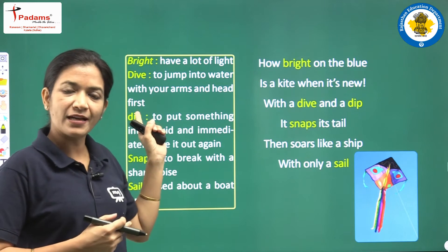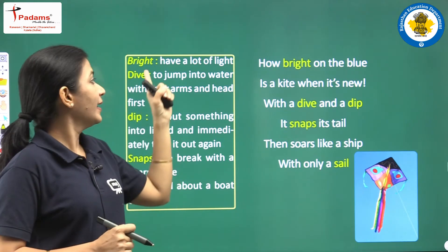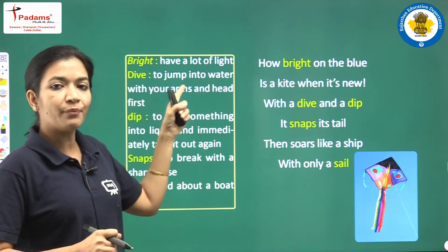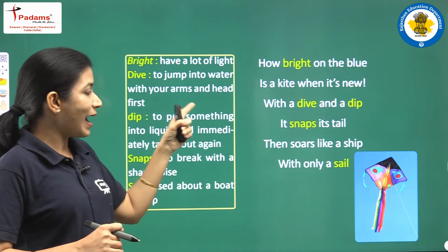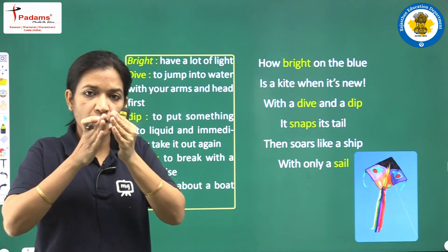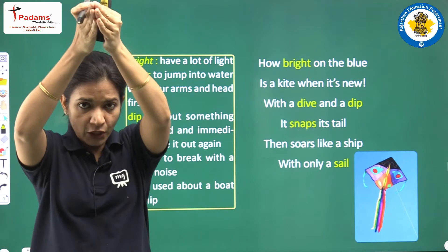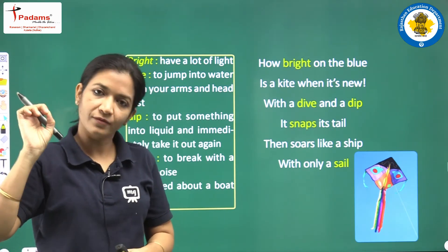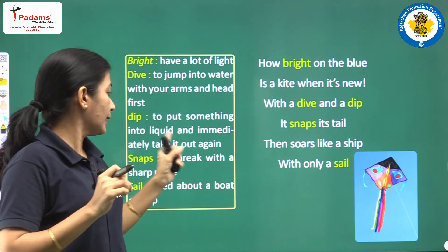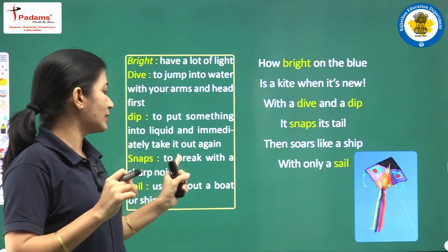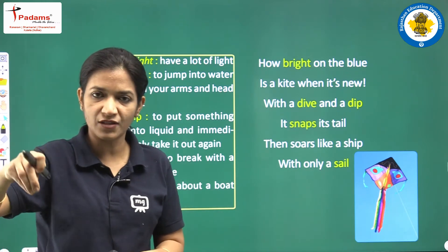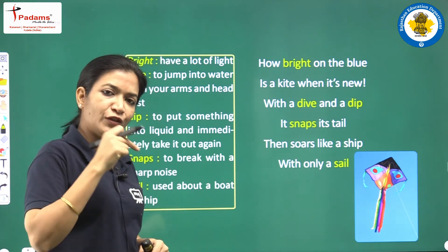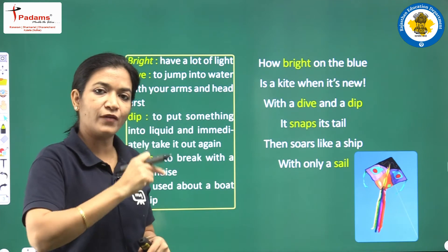First we will start with the hard words. Bright — to have a lot of light; chamkeela. Dive — to jump into water with your arms and head first. Dip — to put something into liquid and immediately take it out again, like when you put something in your sauce or ketchup and then take it out. These are features which a kite does when it flies.